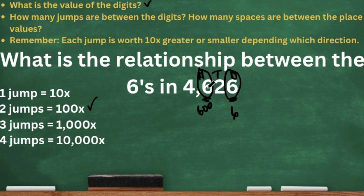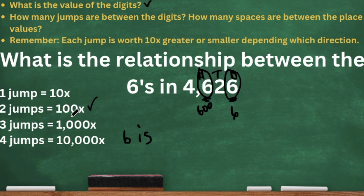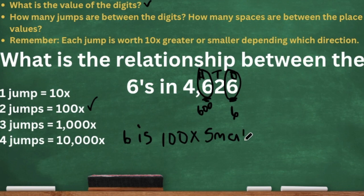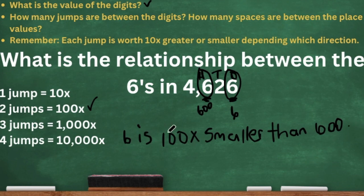Now it's time to write our statements. Let's start with the smaller number, six. We made two jumps, so that's 100 times. Six is 100 times — is six smaller than or bigger than 600? It's smaller than. So six is 100 times smaller than 600. We could also say six is 100 times less than 600, or six is 100 times fewer than 600. Just make sure you make that keyword relate to six being smaller than 600.